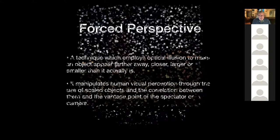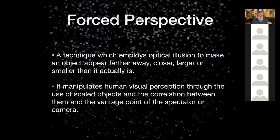The true definition: forced perspective is a technique which employs optical illusion to make an object appear further away, closer, larger, or smaller than it actually is. It manipulates human visual perception through the use of scaled objects and the correlation between them and the vantage point of the spectator or camera. That's a great way to describe it — it really rolls off the tongue.